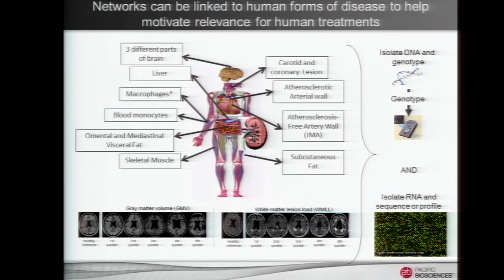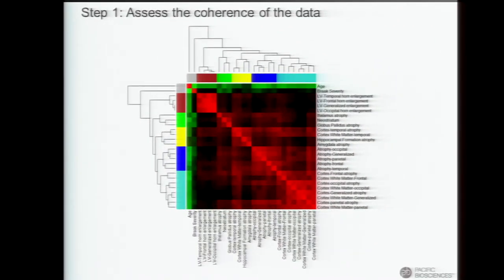We collected all that information along with many other details regarding those samples — pretty well characterized. We isolated DNA, genotyped or sequenced, isolated RNA, and sequenced or profiled. The first step, since these are post-mortem samples, is to look at the different types of traits scored on that population and build a network to see whether there's coherence in the data. We build a network of interactions between all these different traits scored in that particular brain cohort — red indicating positive correlation, green negative correlation — and we start seeing blocks indicating different subnetworks recapitulating different structures, telling us there's coherence in the data.